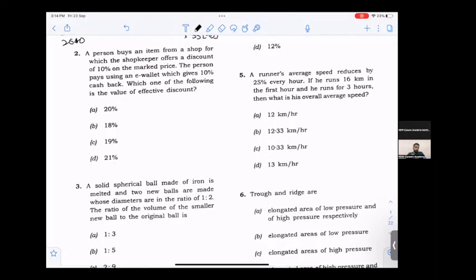A person buys an item from a shop for 100 rupees. Shopkeeper gives 10% discount, so it becomes 90. Then 10% cashback on 90 is 9. So 81 rupees is what you actually paid. The effective discount is 19%.